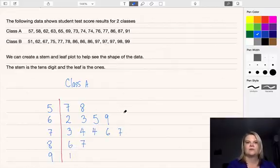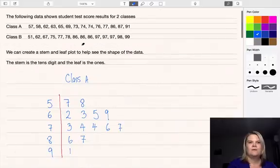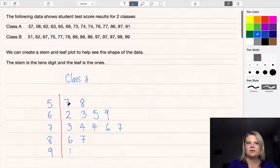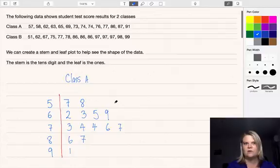I've filled in the rest of the numbers for you there. If you didn't have these numbers in order to begin with it might be difficult to get these in the correct order because you do need to have these leaf parts in order. You can make an unordered stem plot first and then put it into order in a second stem plot if that makes it easier for you to work through.